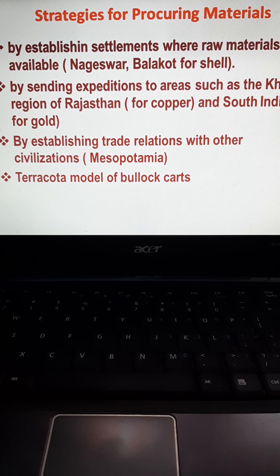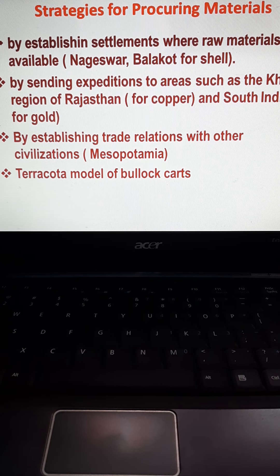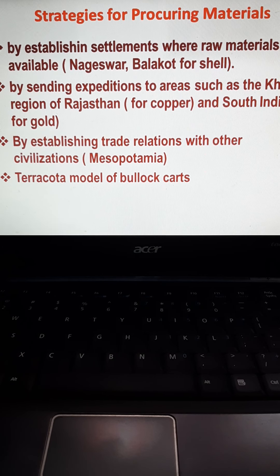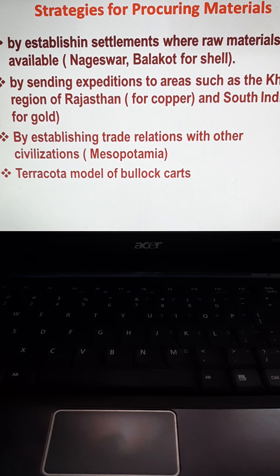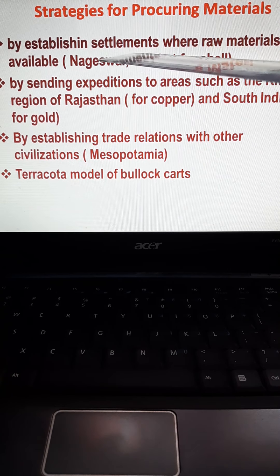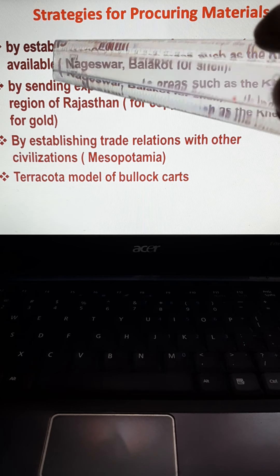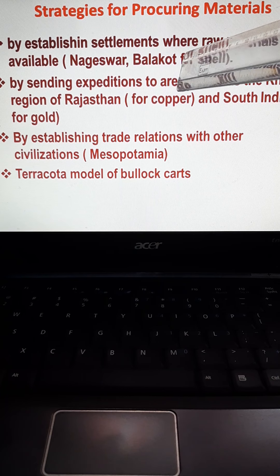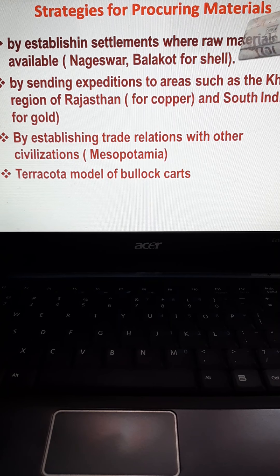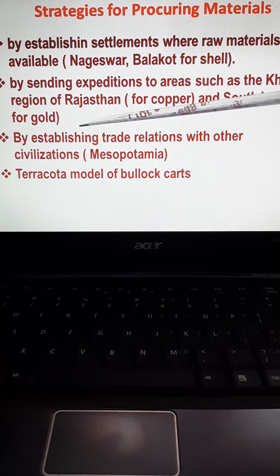Locally available material was also found there. Stones were locally available, while timbers and metals had to be procured from outside. Clay was also locally available — if a large quantity of clay products or broken clay products were found in an area, it indicated that particular center was devoted to clay production. Settlements were also established in areas where raw material was available. For example, Nageshwar and Balakota settlements were found in areas where shell was easily available.